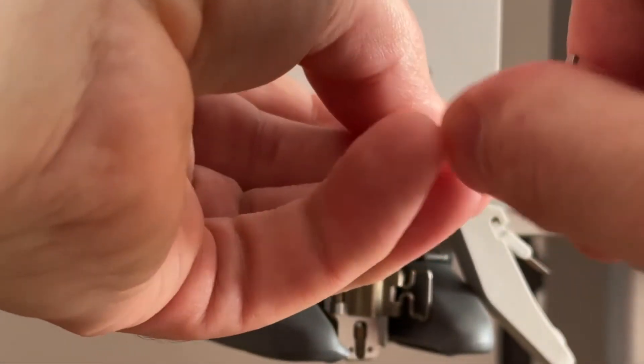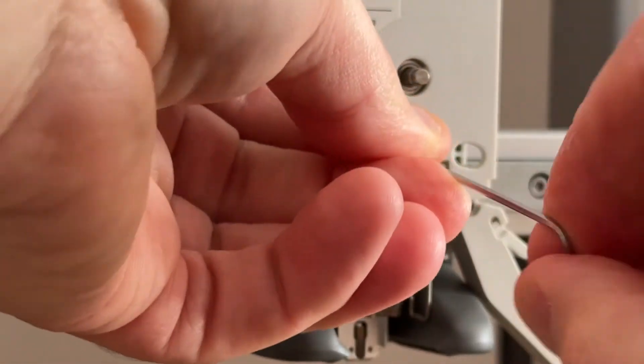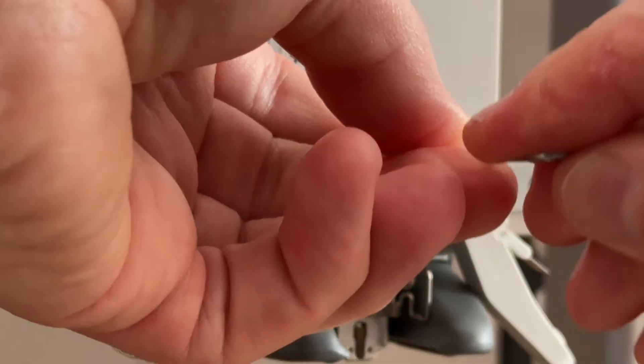If you have any blockages, you could have some pieces of filament in here, so remove these two small screws.